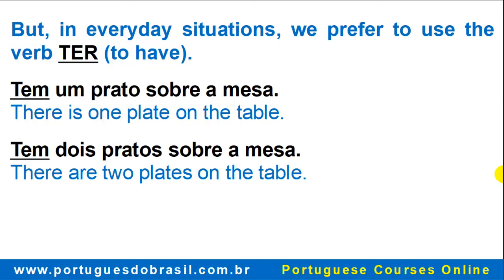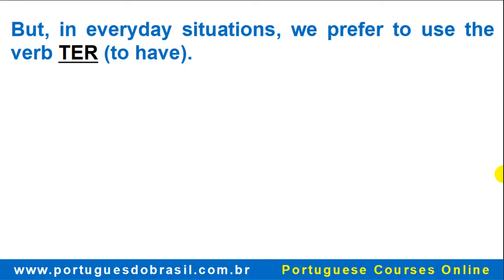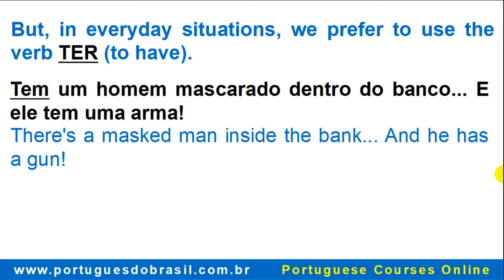What, Ricardo? 'Ter' can mean 'to have' and also 'there is, there are.' But how do I know when it means 'to have' or 'there is, there are'? Good question! The answer is: according to the context. Look! 'Tem um homem mascarado dentro do banco. E ele tem uma arma.' It takes some time to distinguish the meanings, but you'll get it. Note that 'tem' is also used in singular, just like 'há'.